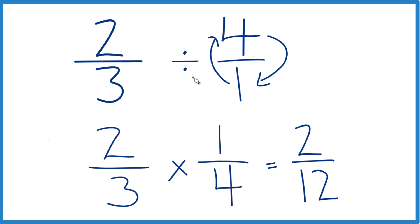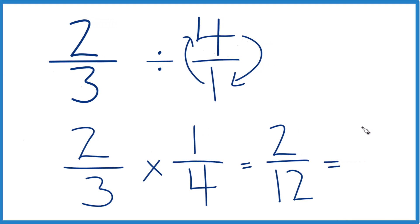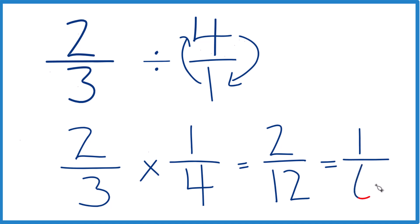And two-thirds divided by four, that's two-twelfths. We could actually simplify this a little bit further. They're both even numbers. So two divided by two is one, twelve divided by two is six.